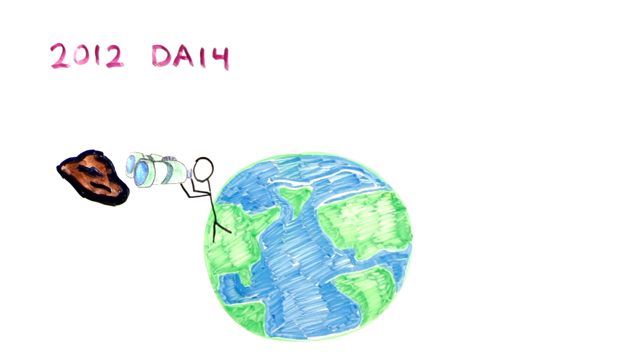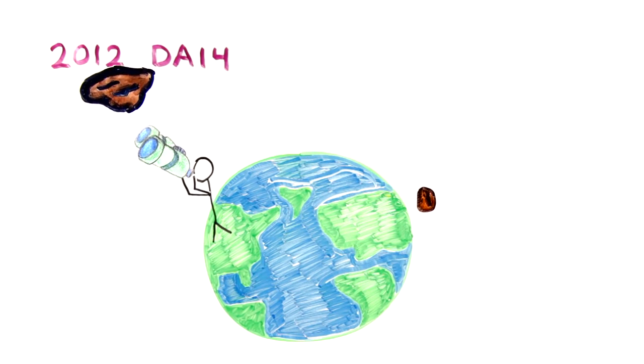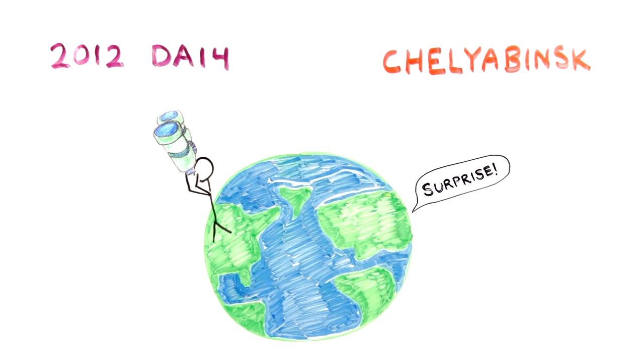On that same day, another unknown asteroid surprised everyone by crashing into Chelyabinsk, Russia, from a completely different direction.